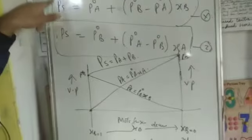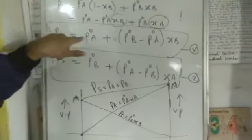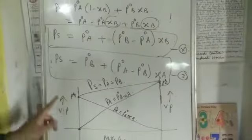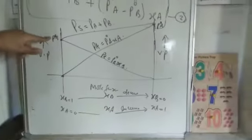Similarly, when you say XB is equal to 1, at that time vapor pressure of the solution becomes equal to P0B because P0A gets cancelled. That is why I am plotting here, when XB is equal to 1, I am plotting here P0B.